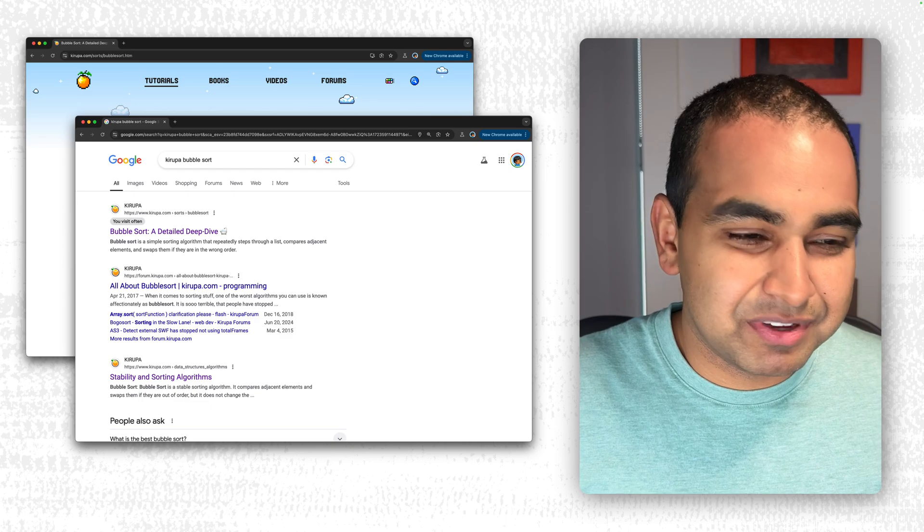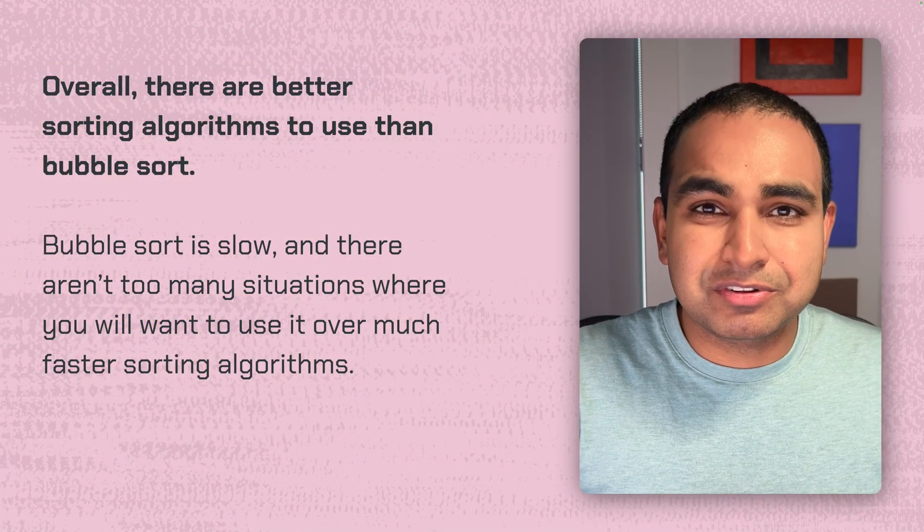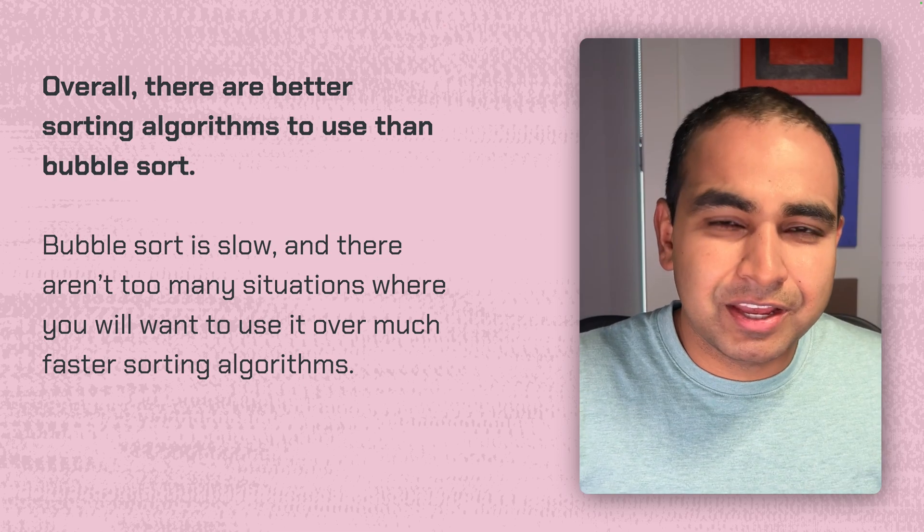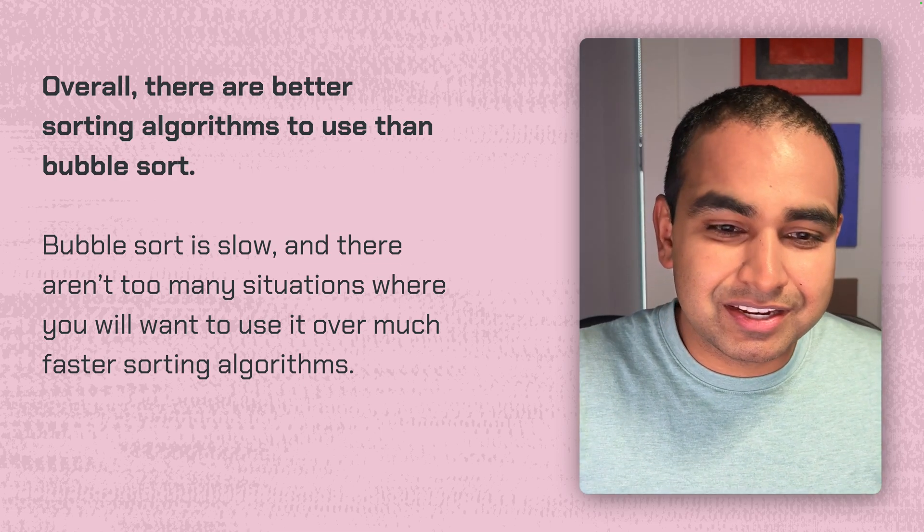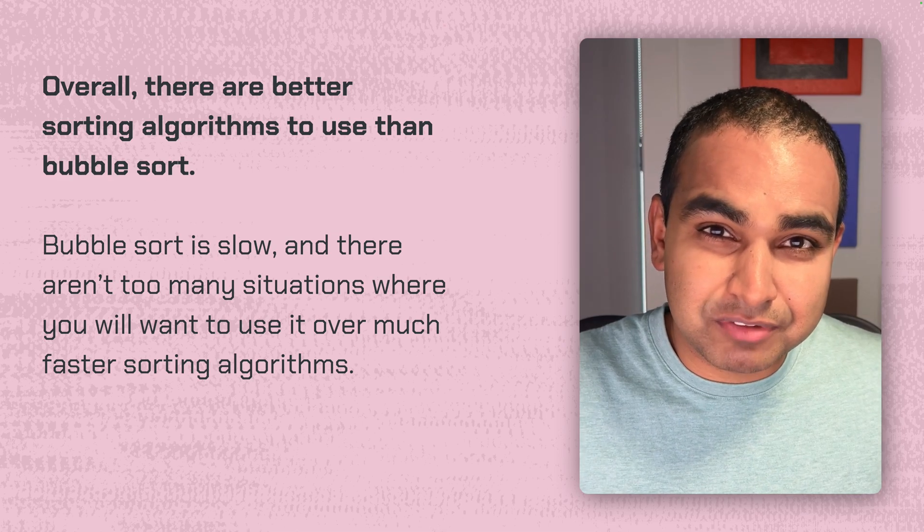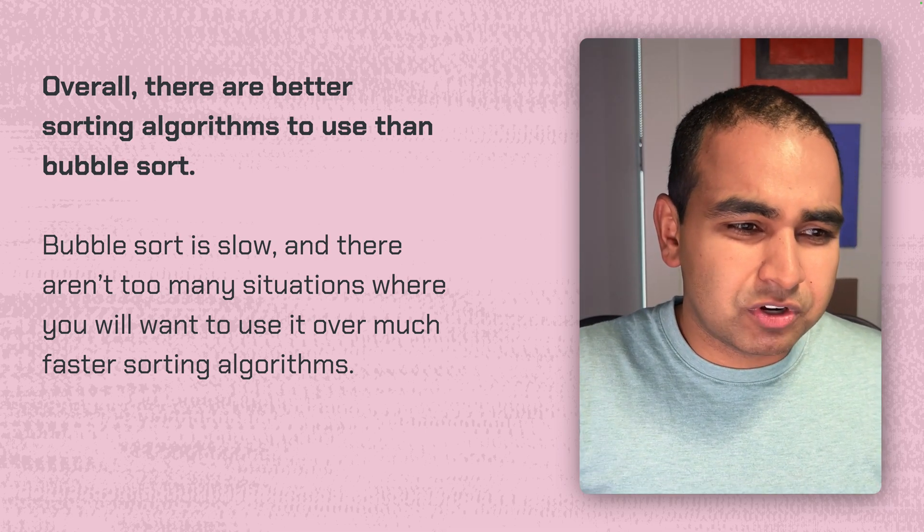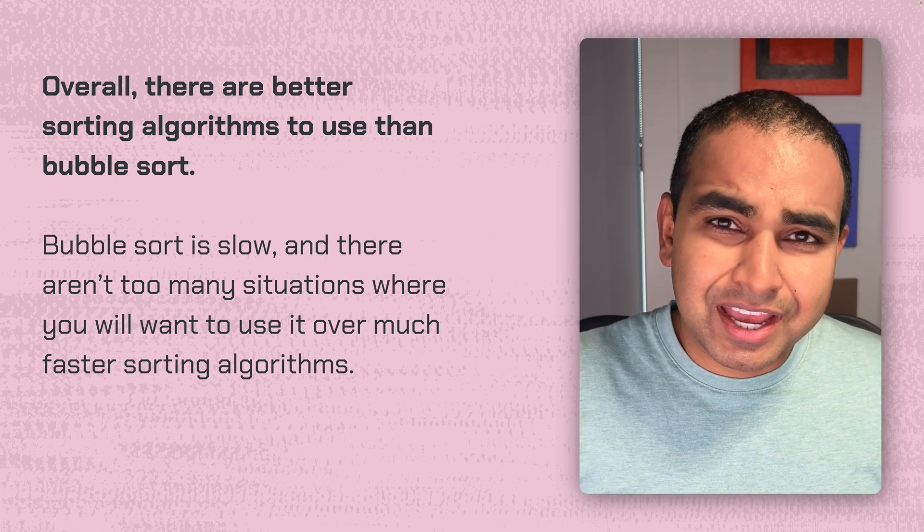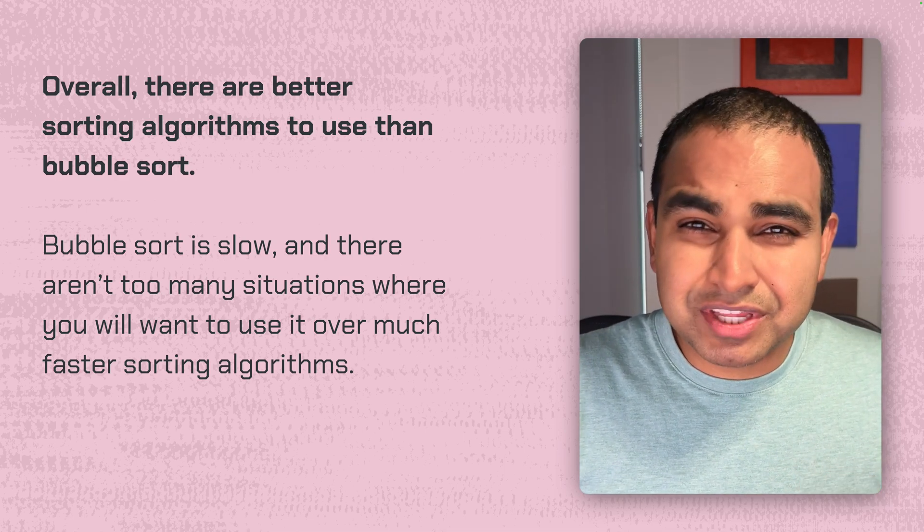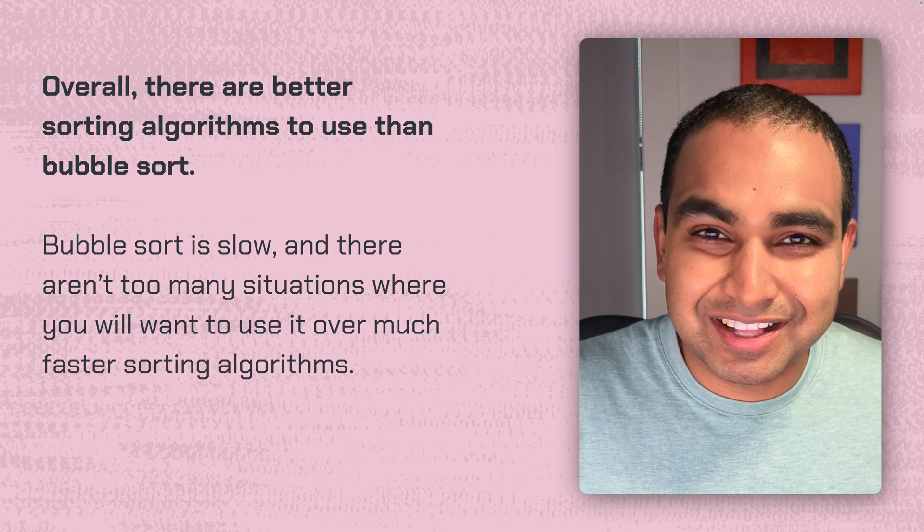And so overall, if I had to describe bubble sort, it's not a great algorithm. It's cool. It's easy to explain. And it has some interesting techniques, both mathematically from a performance analysis point of view, but also how you implement it that can be used in other situations. But overall, bubble sort is slow. And there aren't too many situations where you want to use it over any of the other faster sorting algorithms.